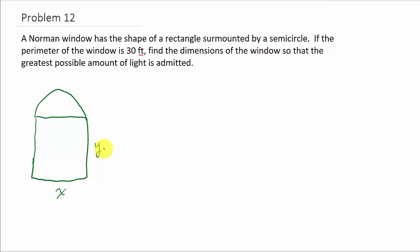Let's look at the information they gave us and what they want us to find. The first thing they tell us is that the perimeter is 30 feet — that's the distance all the way around. So that's this distance plus this distance plus this distance here.